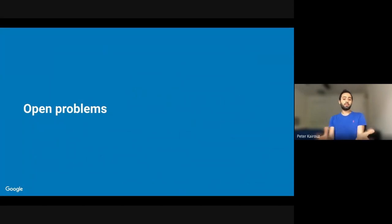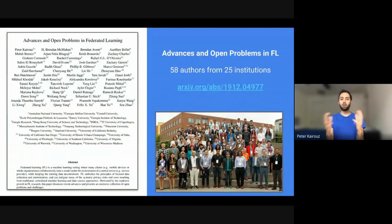For this talk, I would like to focus on some of the recent open problems in this space. This is a very rich topic, and recently we put up a paper on Archive. It's called Advances and Open Problems in Federated Learning. I strongly encourage you to check it out. It has 58 authors from 25 institutions. It's a bit long, but it's very well-partitioned. And I'm going to give you a very quick overview about this paper.